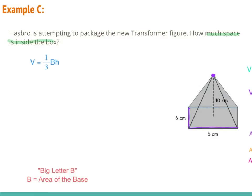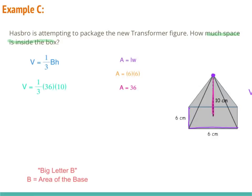Since our base is a rectangle or square, the area formula is length times width. Our length is 6 and our width is 6, so 6 times 6 gives us 36. Now that we have big B, we need the height of the pyramid. The line going straight up and down on the inside tells us the height is 10. Plugging in: one-third times 36 times 10 gives us 120 cubic centimeters.